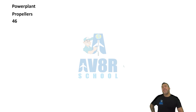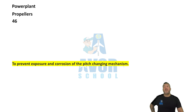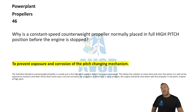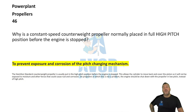Number 46. Why is a constant speed counterweight propeller normally placed in a full high pitch position before the engine is stopped? To prevent exposure and corrosion of the pitch changing mechanism.